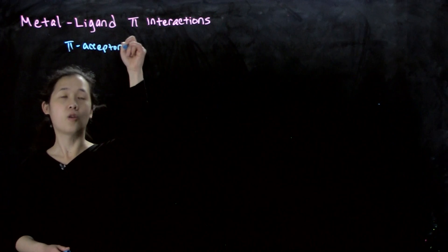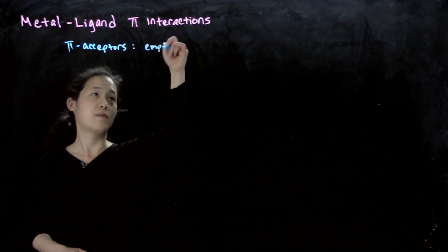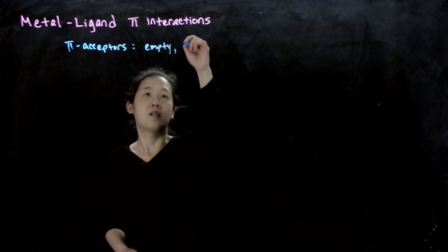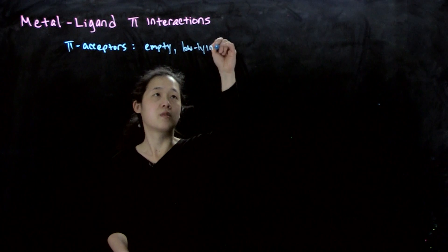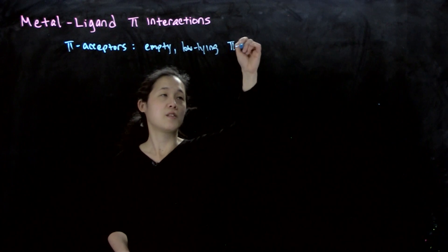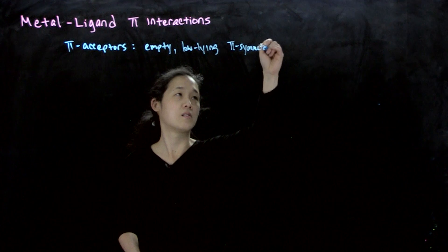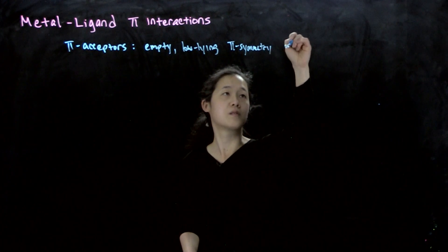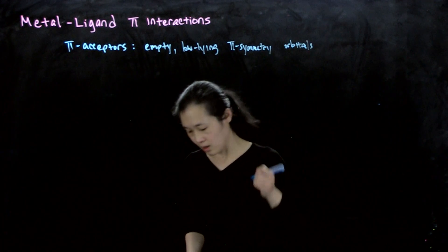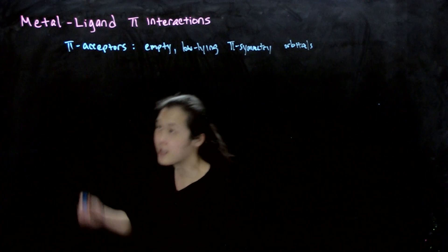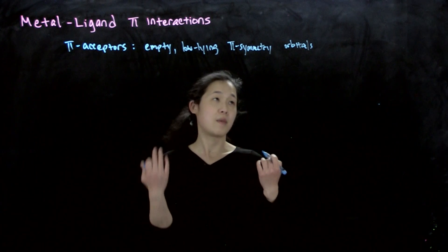Pi acceptors have empty, low-lying, pi-symmetry orbitals. And so that's why they can accept pi-symmetry electron density from the metal.